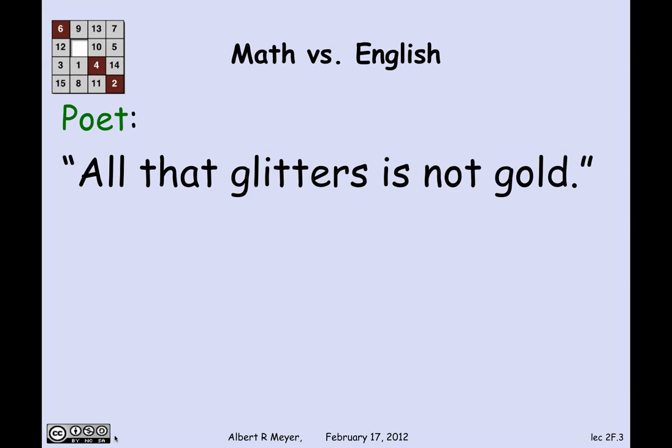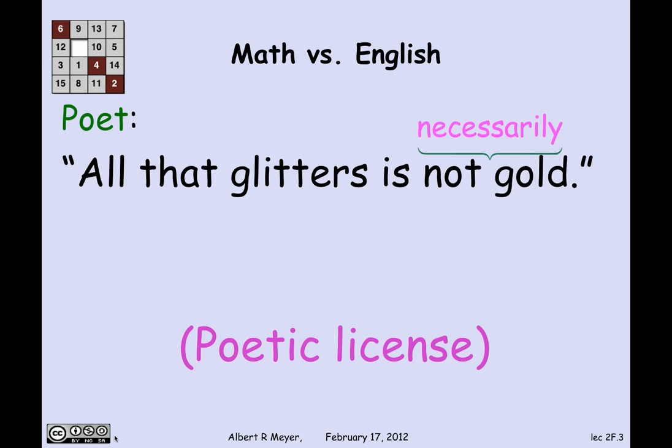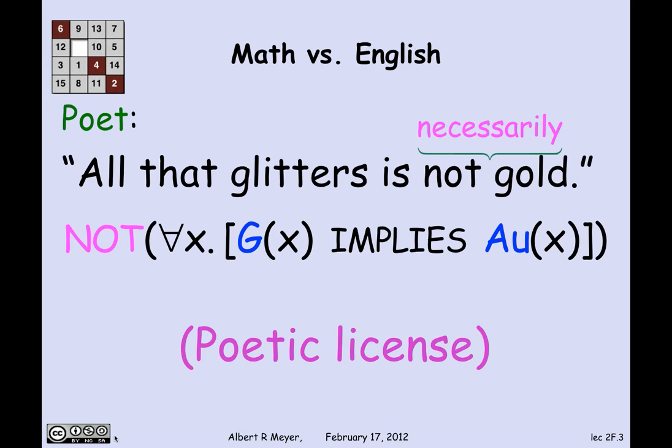What is meant? When the poet says 'all that glitters is not gold,' he's really leaving out a key word to be understood from context: all that glitters is not necessarily gold. He's using poetic license — you're supposed to fill in that meaning. The proper translation would be: it is not true that everything that glitters is gold; it is not the case that for all x, if x glitters, then x is gold. A literal translation, without thinking about what the poet intended, gives you something nonsensical — one of the problems with machine translation from natural language into precise formal language.